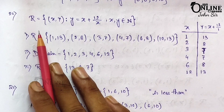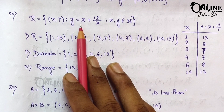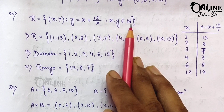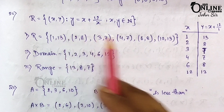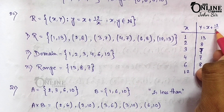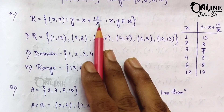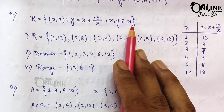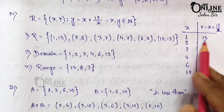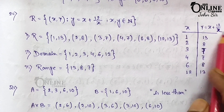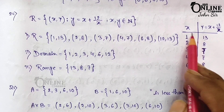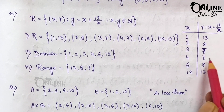Now sum number 20. If R is the relation on N defined by R = {(x,y)} such that y = x + 12/x and x,y belongs to natural numbers, find R in roster form. If x = 1: y = 1 + 12/1 = 13. If x = 2: y = 2 + 12/2 = 8. If x = 3: y = 3 + 12/3 = 7. If x = 4: y = 4 + 12/4 = 7.